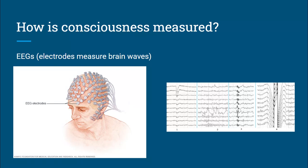For measuring consciousness, the tool used is the EEG — the electroencephalogram — which studies the activity of the brain through different neural firing patterns. It's not showing which parts of the brain are active; you'd use a PET scan for that. The EEG studies the rate at which neurons are firing, because even when we're asleep parts of the brain are active. The EEG lets us see patterns that tell us if someone is awake, asleep, or having hallucinations.